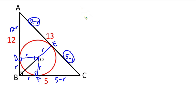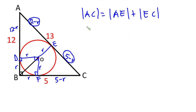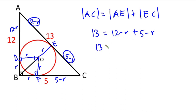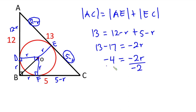Now looking at AC, we can see that the total length of AC equals 13. So when we sum 12 minus R and 5 minus R, we should get 13. So: AC = AE + EC, meaning 13 = (12 − R) + (5 − R). This gives us 13 = 17 − 2R, so 13 minus 17 is negative 4, equal to negative 2R. Dividing both sides by negative 2, we get R equals 2 units.